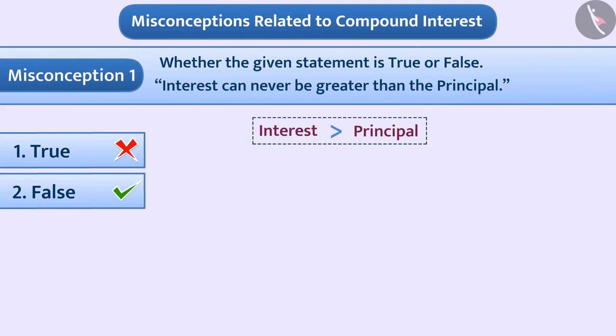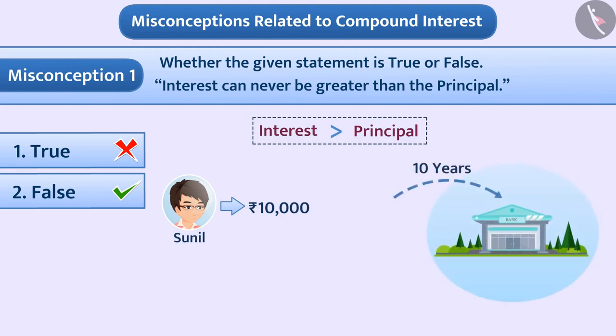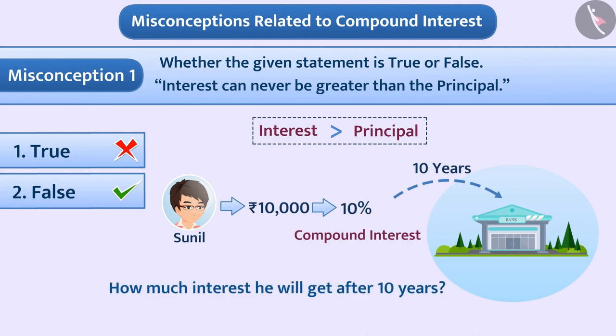Let us understand in which case the amount of interest can be larger than the principal. Suppose Sunil deposits 10,000 rupees in the bank for 10 years at the rate of 10% compound interest. Let us find out how much interest he will get after 10 years.